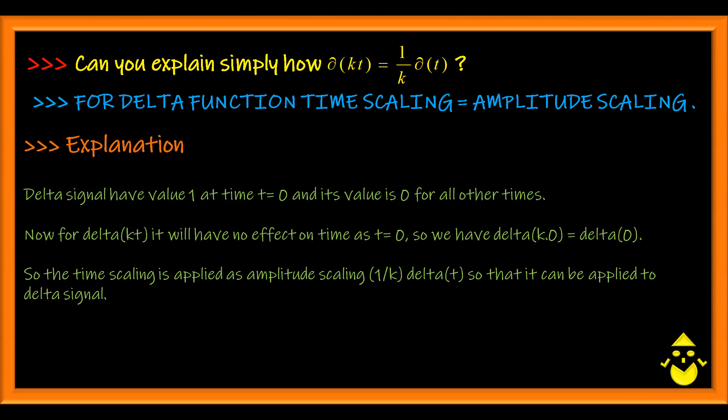So at time t equal to 0, the value of delta is 1, so the delta of kt must be equal to delta of t. But since the integral of delta is used from minus infinity to plus infinity, your time scaling converts to amplitude scaling.